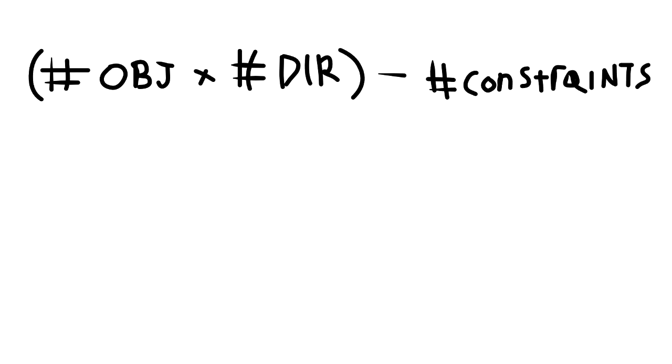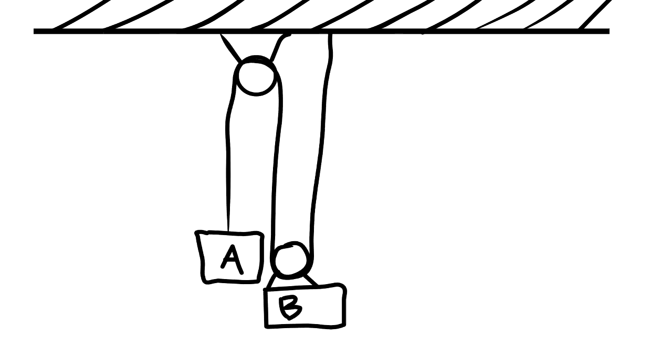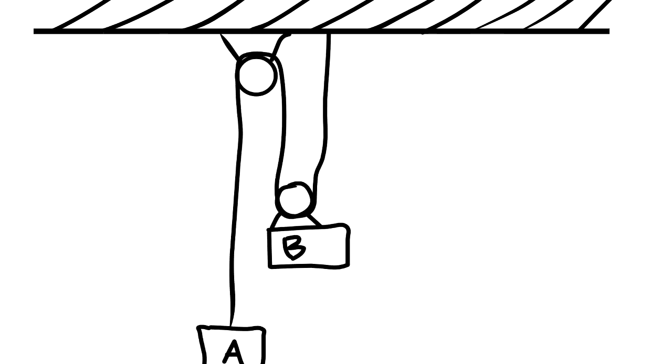Determining the number of degrees of freedom for more than one object can be done with the following equation. The number of degrees of freedom of a system is equal to the number of objects in the system multiplied by the number of directions of motion minus the number of constraints. In the case of the simple pulley system we saw before, there are two objects that each have one direction of motion, and there is one constraint, the cable.